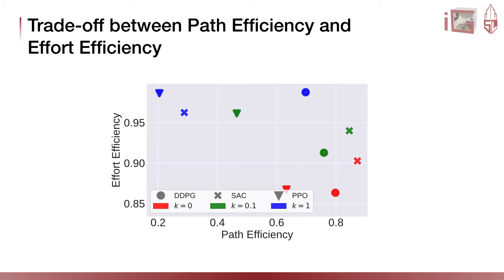In this plot, we compare different reinforcement learning algorithms and different interaction penalty parameters using both components of our novel INS metric. There is a clear trade-off between path-efficiency and effort-efficiency — improving one decreases the other, as highlighted by the dashed line.